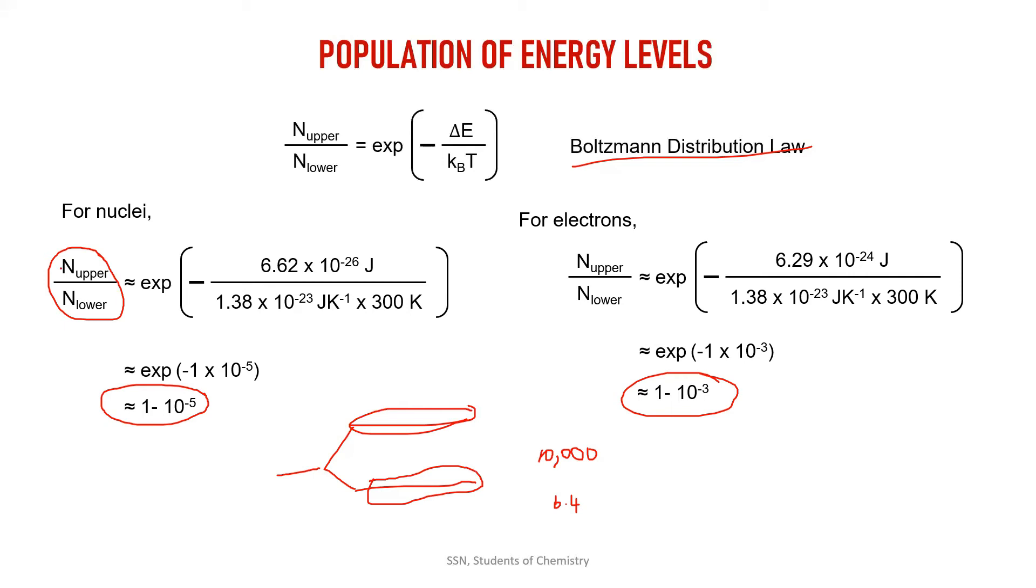number of particles in upper energy level divided by number of particles in lower energy level. If this ratio is less than one, then my lower energy level is having more particles, my lower energy level is having more particles compared to the upper energy level.